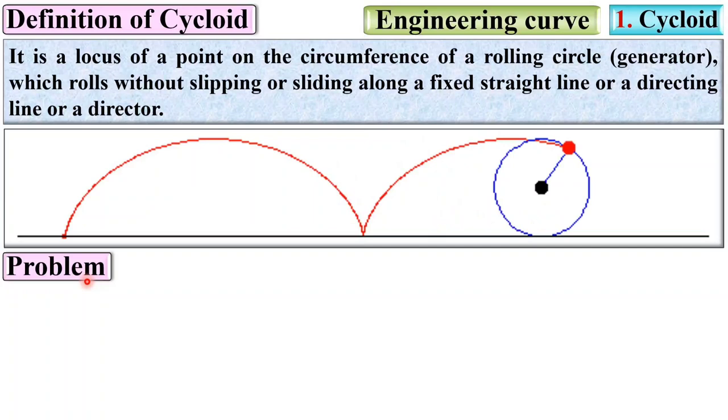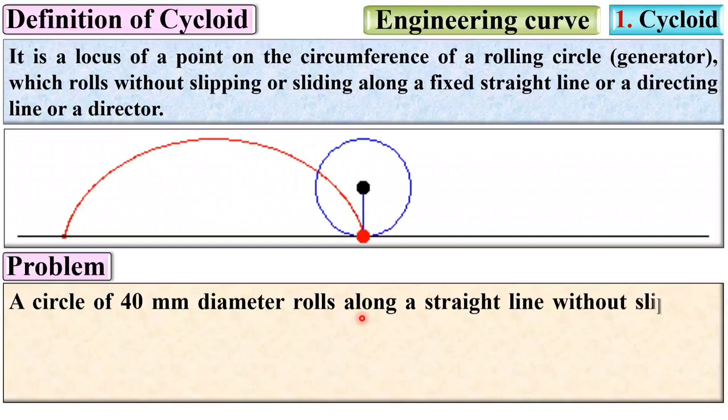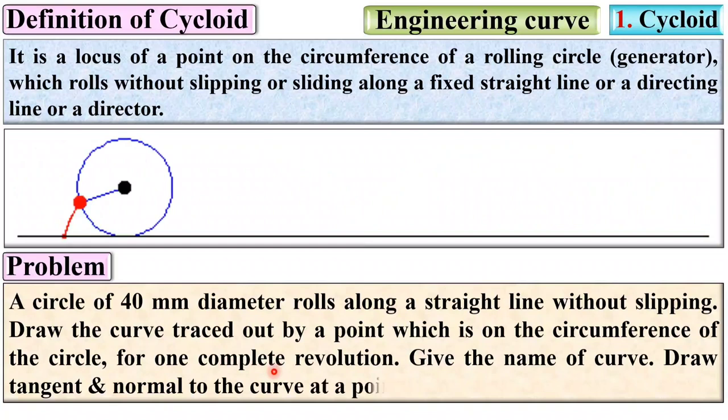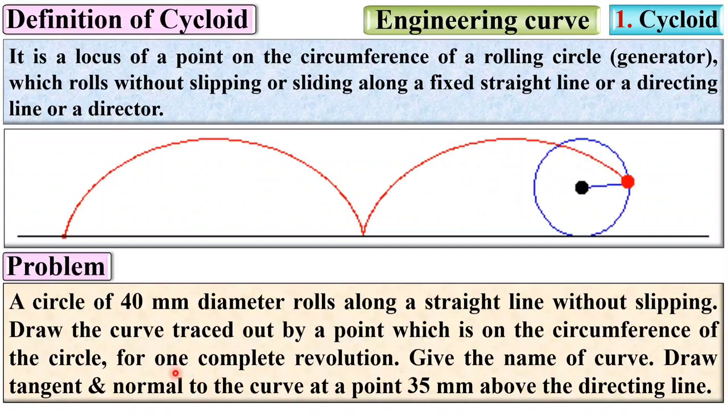Let us see the problem description. A circle of 40 mm diameter rolls along a straight line without slipping. Draw the curve traced out by a point on the circumference of the circle for one complete revolution. Give the name of the curve. Draw tangent and normal to the curve at a point 35 mm above the directing line.